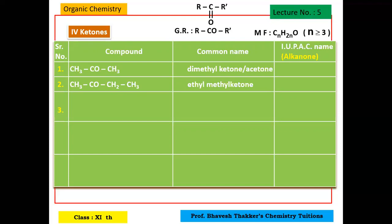For the next compound, on one side there is one carbon (methyl) and on the other side there are two carbons (ethyl). Alphabetically, E comes before M, so this is called ethyl methyl ketone. For the third compound, on both sides there are 2 carbons, so both groups are ethyl — making it diethyl ketone.